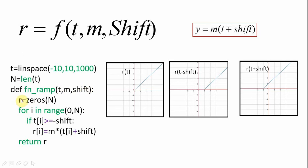We initialize an array r with zeros, number of zeros is equal to capital N, and we check this value of t to see whether it is greater than the given shift or less than the given shift. For i in the range 0 to capital N check if any time is greater than or equal to the shift. If that is so replace the 0 by the value calculated by this equation: r of i is equal to m into within parenthesis t of i plus shift.